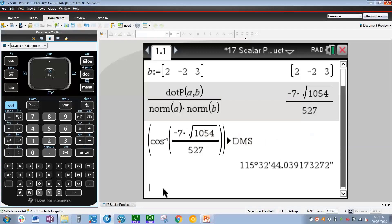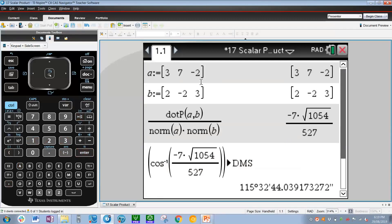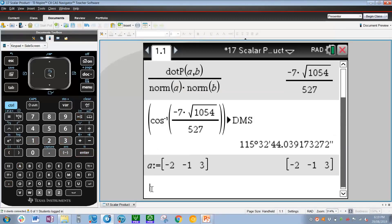So a, and then control template to define, control open bracket, and the vector is -2i, and then -j, which is -1, comma 3. There's vector a done. Notice how we defined vector a on top of the previously defined vector a. That is possible; it simply rewrites the previous definition of a.